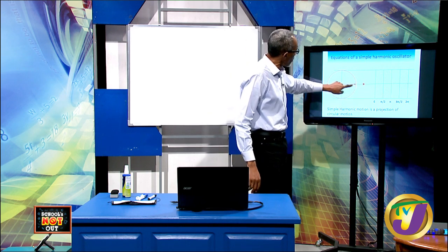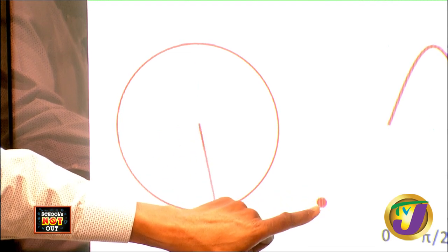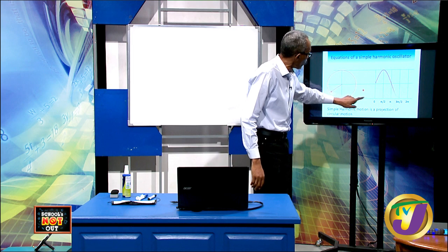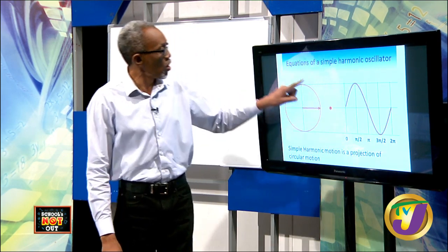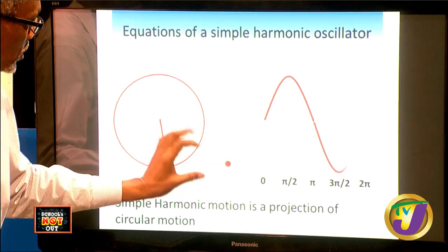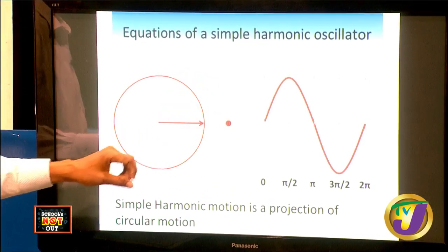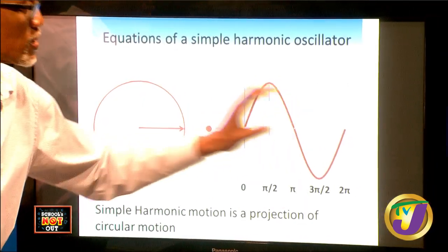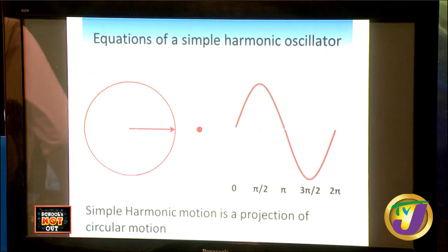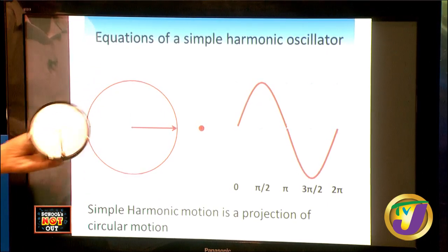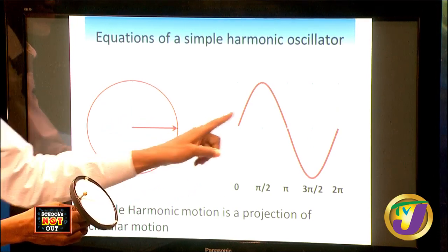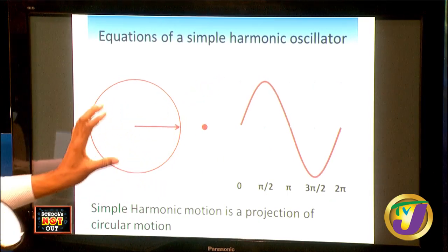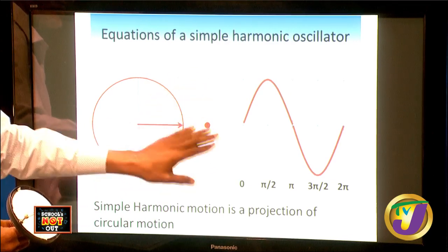Here we have the phasor going around anti-clockwise. The shadow moves up and down, and we are plotting a graph of the angular displacement of the phasor against the linear displacement of the dot. When you do that, you get a sinusoidal curve. So we are relating circular motion to oscillatory motion to a graphical representation, moving from stage to stage.